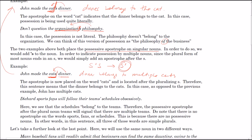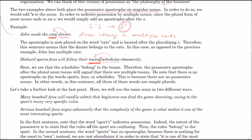Diehard sports fans will follow their teams' schedules obsessively. Here the apostrophe is after the S, meaning multiple teams own the schedules. Note there are no apostrophes on 'sports,' 'fans,' or 'schedules' — none of those own another noun. There's actually a case to be made for putting an apostrophe on 'sports,' but generally we use it as an adjective. Either way is correct in that case, and you'd never encounter an ambiguous question like that on the test.